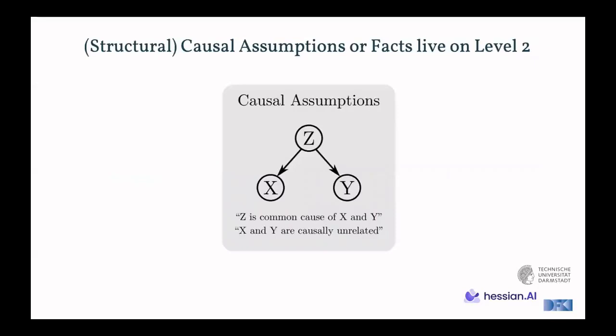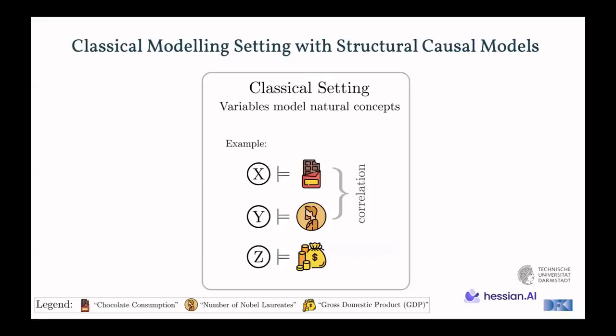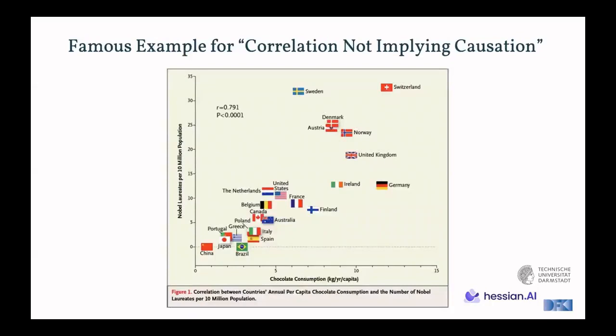So consider structural causal assumptions or facts that live on level two of the hierarchy. For example, we have a graph here with three variables, x, y, z, and z is a common cause, the confounder of x and y, and x and y actually cause the unrelated. Now let's make this an example. So let's say x is chocolate consumption in a country, y is the number of Nobel laureates in that country, and say z is something like the GDP of that country. Then there's this famous article which shows that there's a clear correlation between x and y. We have Switzerland at the top, having both a high chocolate consumption and a high number of Nobel laureates. But obviously, we would never conclude that this is causal. So just that we see this correlation would not be implying causation. And why? Well, GDP is a good explanation for this, that the higher GDP that we also have in Switzerland, leads to both better research facilities, leading to more Nobel laureates, but also to more chance for chocolate production, and therefore more consumption.